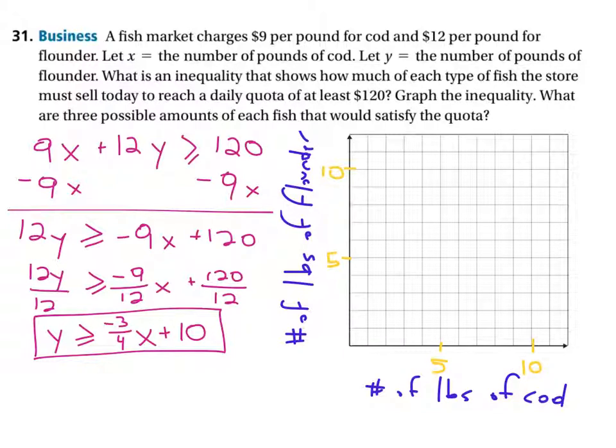This equation at the bottom that we've rewritten it into the form where we can graph it. And you see I've graphed, I've labeled our graph. It says that the X axis is number of pounds of cod and the X axis is the one going across the bottom here. I've got that labeled as that and the Y axis, because it says let Y equal the number of pounds of flounder. We've got that on the Y axis.